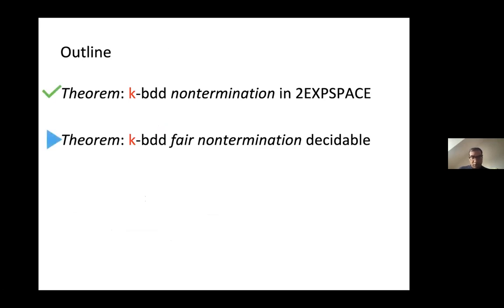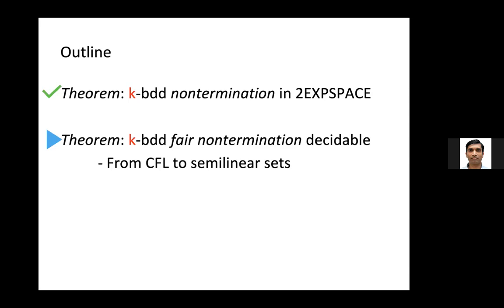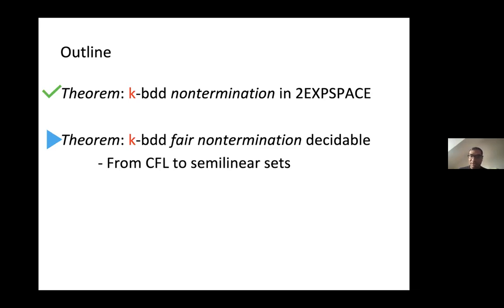We now know that fair non-termination is decidable, but we need different technology. A question is raised: can you give an example of a two-thread system that does not terminate under k-bounded and fair assumptions? If you don't have spawning of other threads, with only two threads and bounded switches, you cannot have a non-terminating run. But if threads spawn additional tasks, under fairness those tasks must also be executed, so you can build a non-terminating system by round-robining over new tasks. Importantly, k is per thread — every thread is allowed k switches.